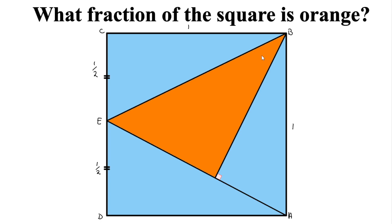These two triangles are congruent — they have the same shape and the same size. So the area of each of these triangles would be equal to 1 times 1/2, all divided by 2. So that would give us 1 quarter square units.